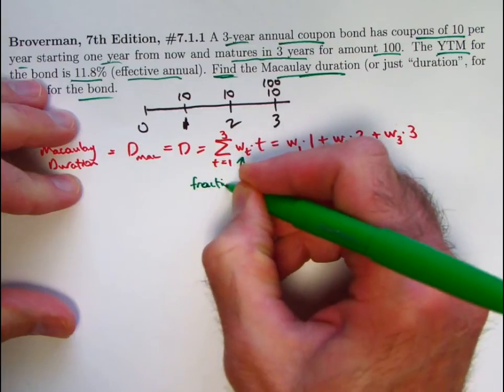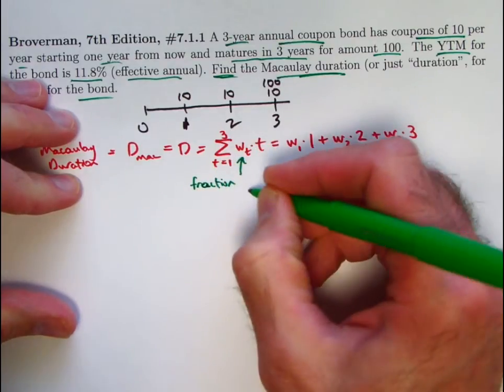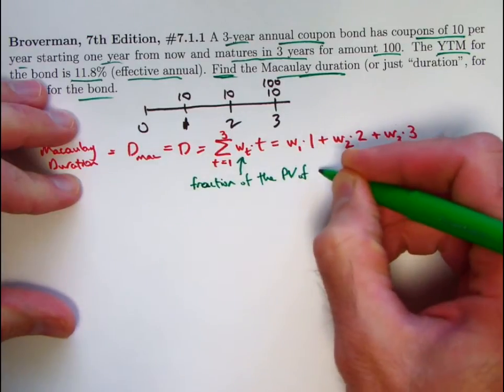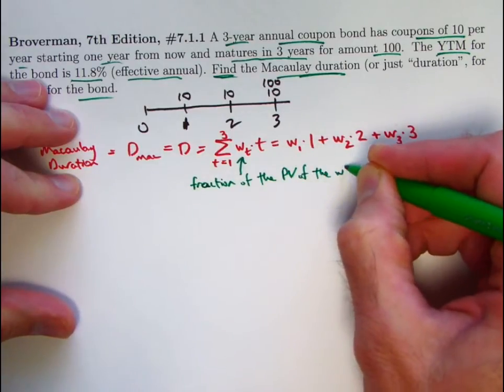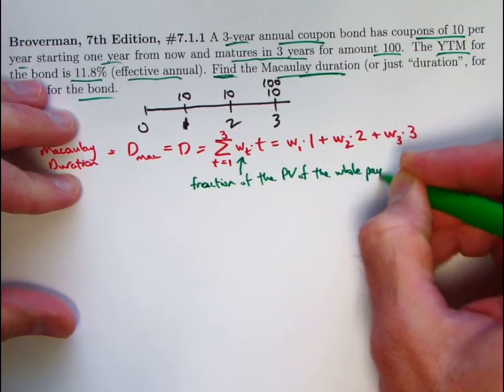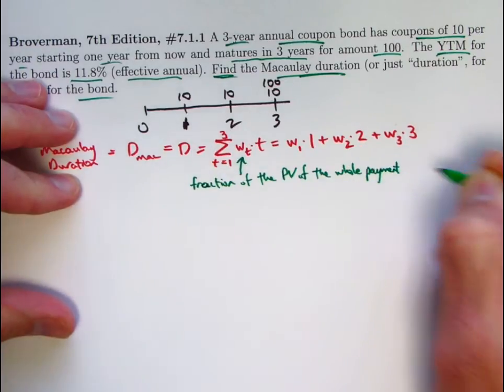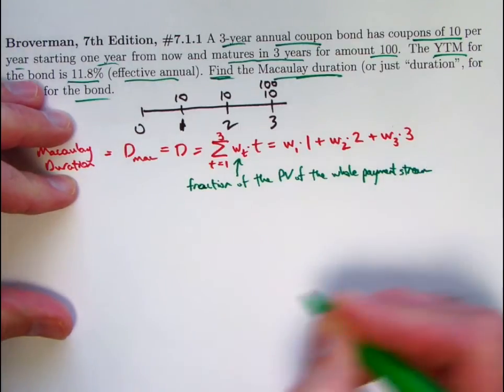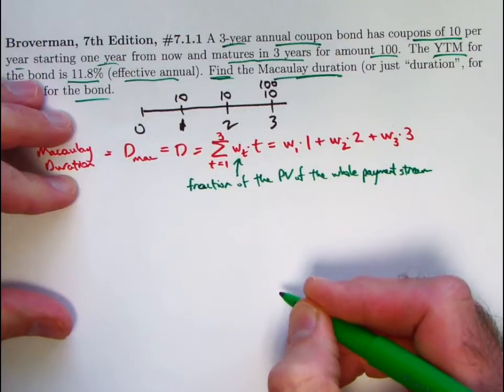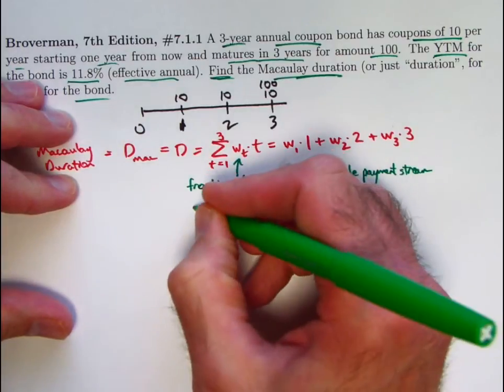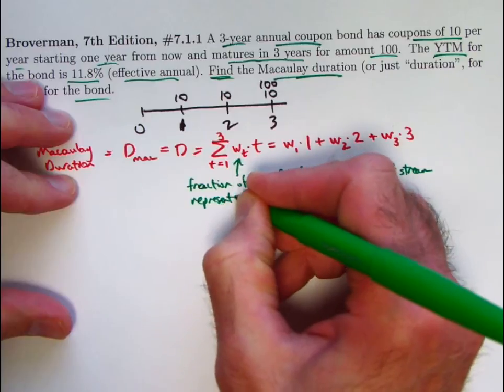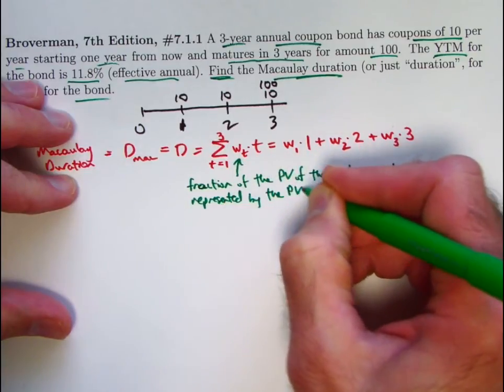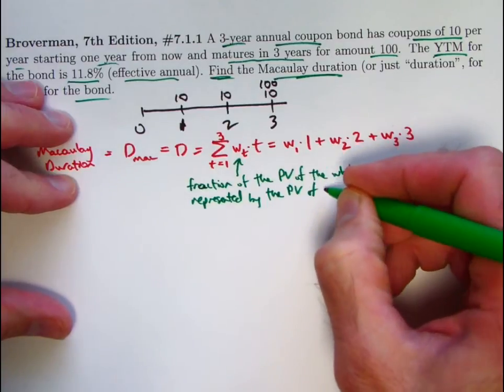fraction of the present value of the whole payment stream. In other words, for a bond, it's going to be the price of the bond, fraction of the present value of the whole payment stream represented by the present value of the payment at time T.